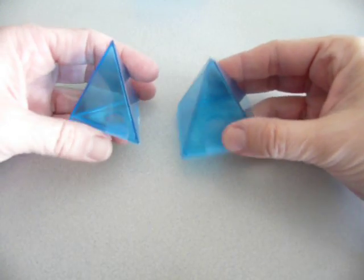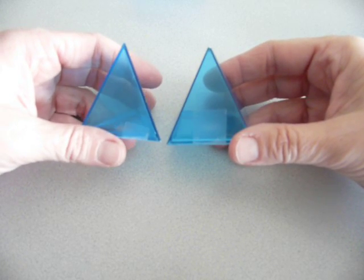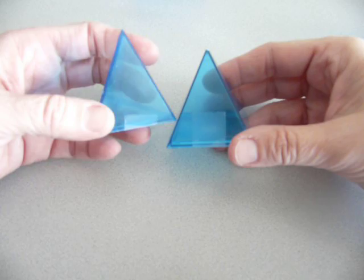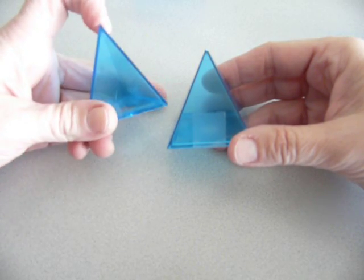Today we're going to discuss geometric solids. Both of these are pyramids. I know they're pyramids because all of the sides are triangles and they come to a point together at the top.